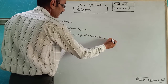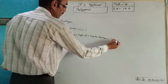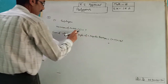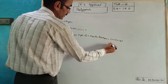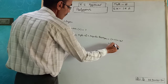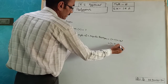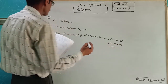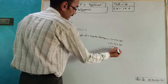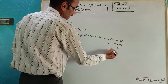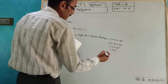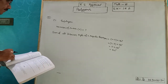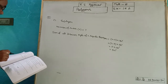The formula is (N minus 2) into 180 degrees. N value is 7, so 7 minus 2 into 180 equals 5 into 180, which equals 900 degrees. First part of question 5 is complete.